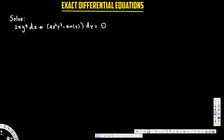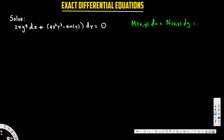In this video we are going to see how to solve an exact differential equation. We have an equation we need to prove is exact, but first we have to make sure it is in standard form. The standard form of an exact differential equation looks like this: M(x,y) dx + N(x,y) dy = 0. Looking at our equation, we already have that pattern, so we don't need to rearrange anything.